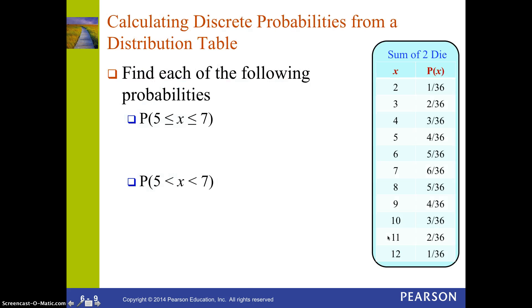So, if I'm going to calculate some discrete probabilities from the distribution table, first let's look at what's the probability that X is between 5 and 7, and we're going to include both the 5 and the 7. So, you're rolling two dice. You want to know what's the probability that your sum is either 5, 6, or 7. So, in this case, I'm looking at the three outcomes, 5, 6, or 7. All I have to do is add up the 4/36, the 5/36, and the 6/36, and I get 15/36.